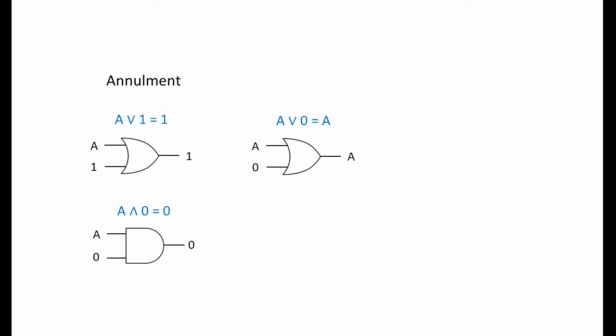Consider this OR gate where one of the inputs is always 0, so the output will always match the value of input A. If input A is 0, we have two 0s going in, so a 0 comes out. If input A is 1, we have a 1 and a 0 going in, so a 1 comes out. This AND gate arrangement is similar — with one of the inputs permanently set to 1, the output will always match input A. This pair of expressions are referred to collectively as the identity law: an input ORed with a 0 or ANDed with a 1 will always give an output equal to the input.